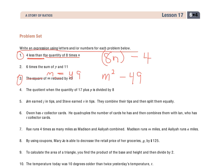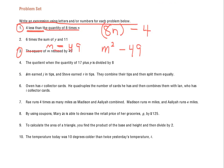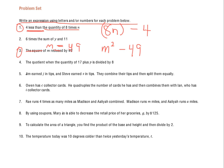Let's go down to 7 now. I'm going to jump around a little bit. And it states, Ray runs 4 times as many miles as Madison and Aaliyah combined. Madison runs m miles, and Aaliyah runs a miles. So I'm going to box that part in so I know. And then I have Ray runs 4 times as many miles as those two girls. So I know that I'm going to do 4 times Madison and Aaliyah combined. So Madison is M,